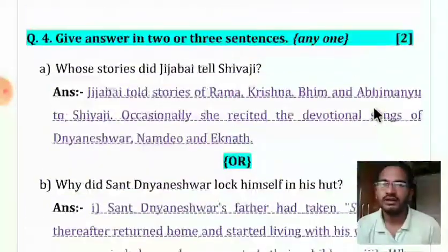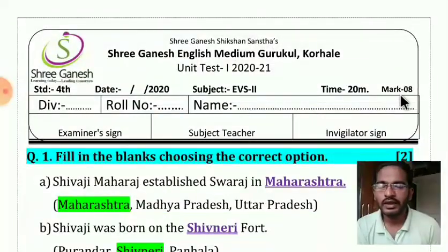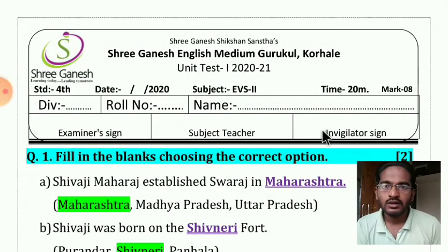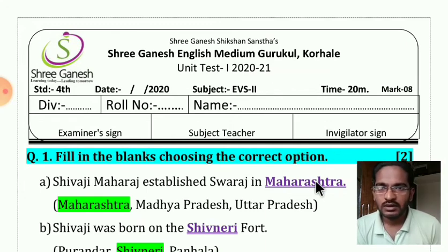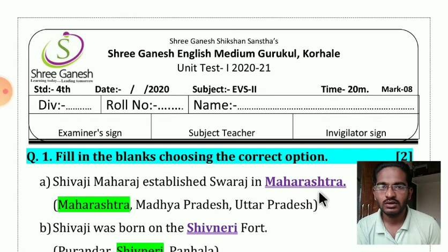Your paper was very simple and it was for eight marks. Your result will be declared soon. Check your paper like this, copy all the answers properly in your notebook, and send it on your school's WhatsApp group as homework. Thank you very much.